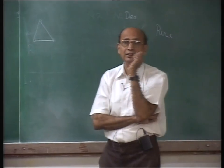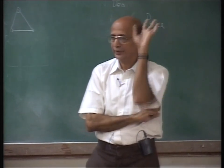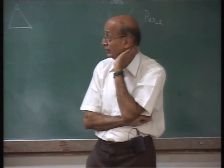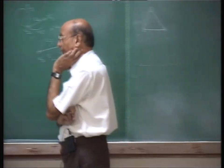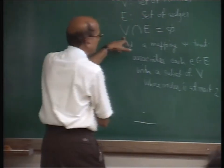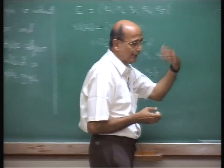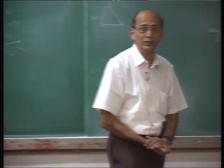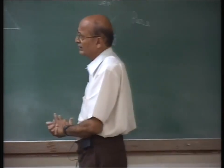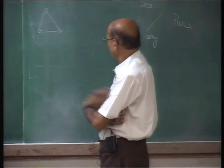Incidentally, I will be using the letter capital G to denote a graph always, all through this course. Capital G is reserved for graph. Also, the sets capital V and capital E are finite sets. When they are infinite sets, it leads to a different kind of graph theory which we do not want to look at. V and E both are finite sets.